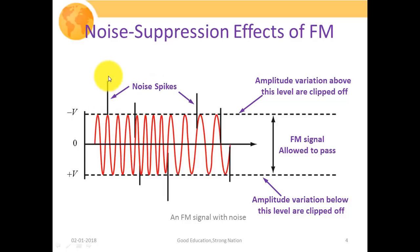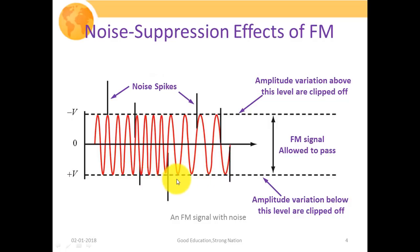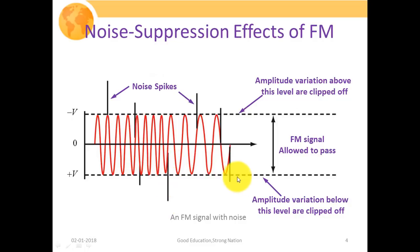Due to the additive nature of noise, we are going to get the distorted signal. So what we can actually do is use a circuitry which could clip off the excess amplitude of our signal that has been produced due to noise. So we are specifically using a type of limiter circuitry which will only pass our fixed amplitude carrier waveform and clip off all other portions of the signal which have been produced due to the effect of noise.